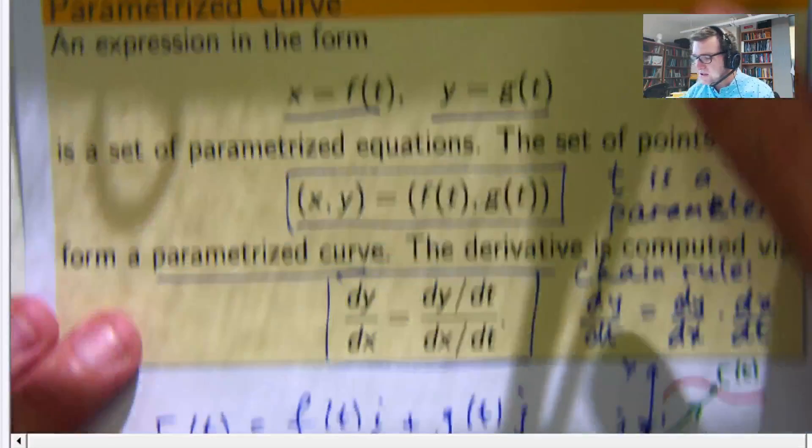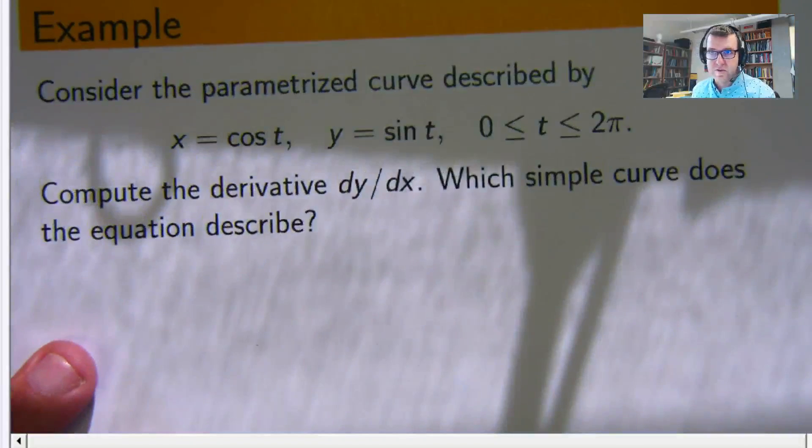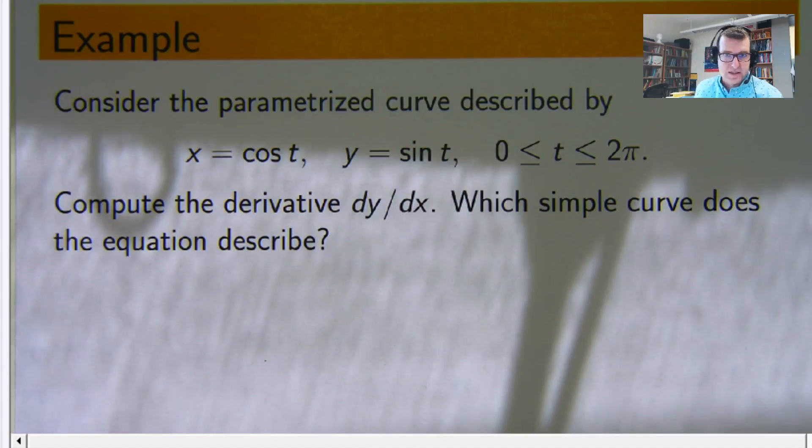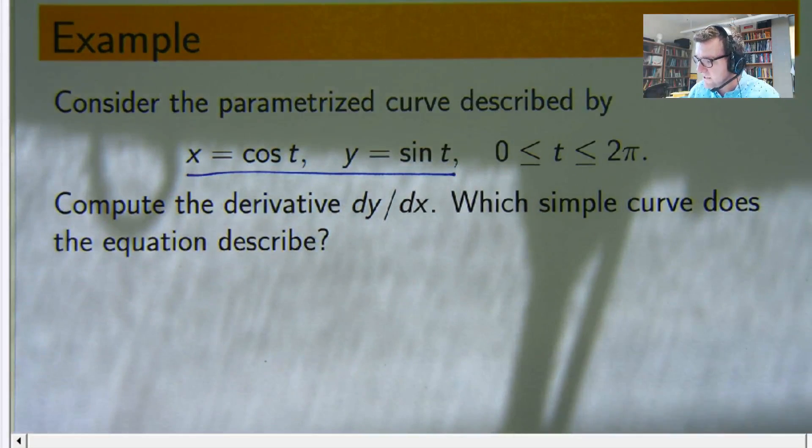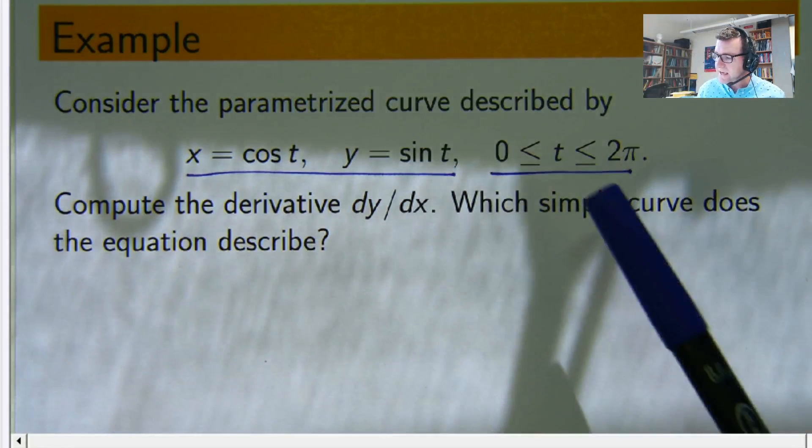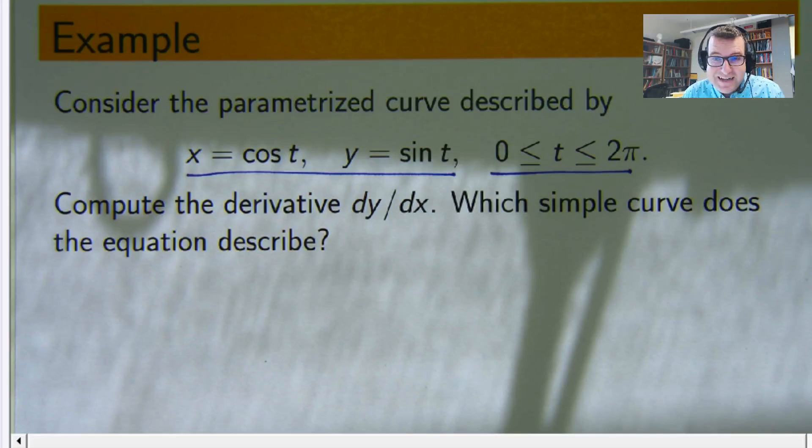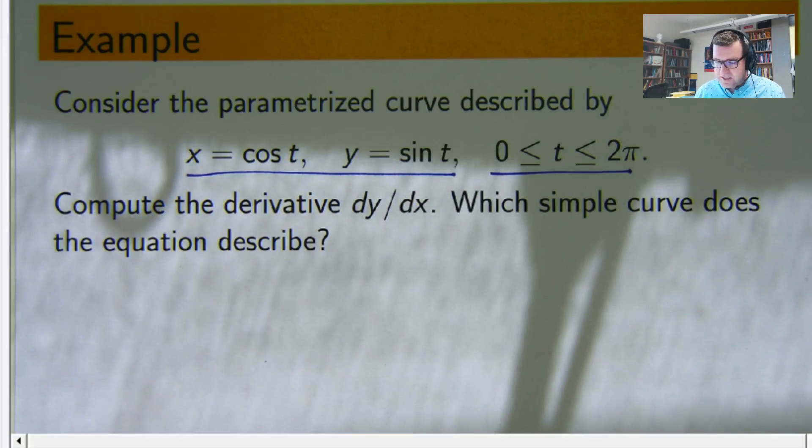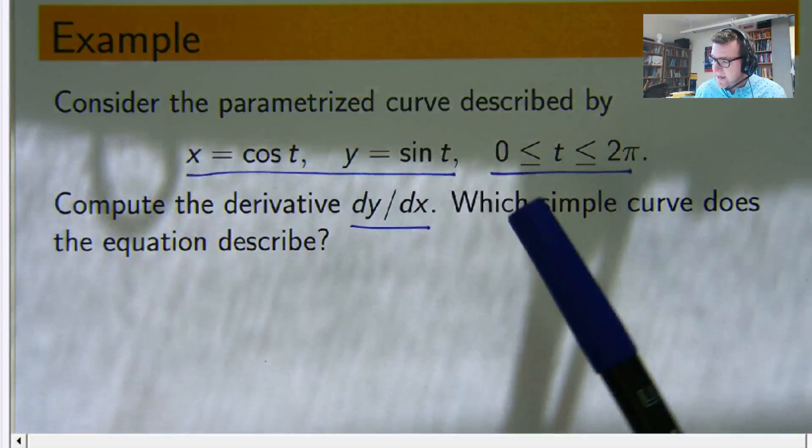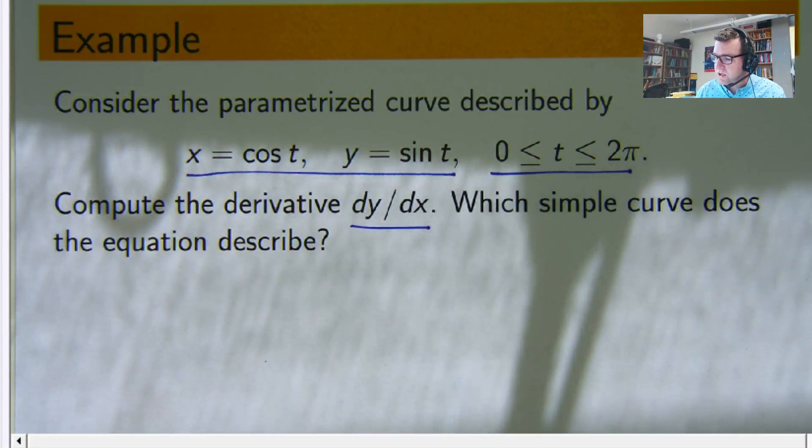Okay, so that's a quick crash course. Let's look at an example. Here we have a parameterized curve where x and y are given by cosine t and sine t respectively, and the parameter t varies between zero and two pi. The first question: compute the derivative dy/dx. And then the second part is which simple curve does the equation describe?